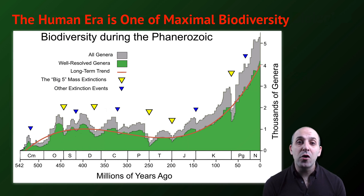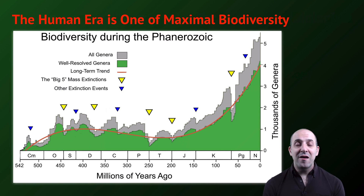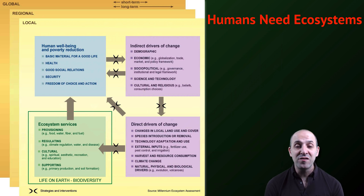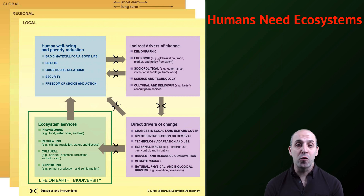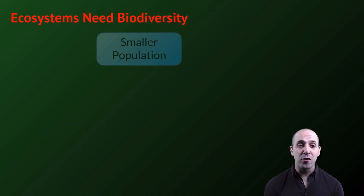Let's start with some good news. The human era is one of maximal biodiversity on the planet. In the entire history of the planet, biodiversity has never been as high as it is right now during the ascendancy of the human population. Humans need the ecosystems that this biodiversity provides — they provide us with ecosystem services and the various other things that we need in order to remain alive and functional in the world. And as we've discussed previously, ecosystems need biodiversity.